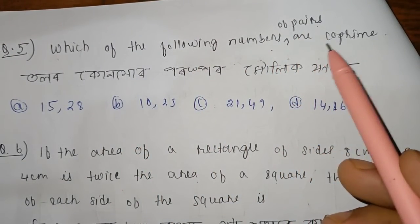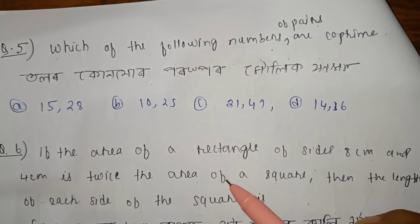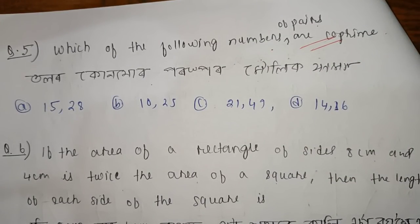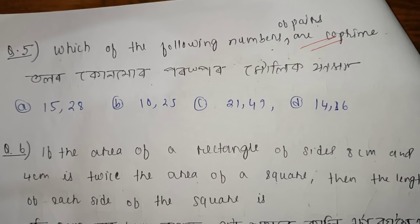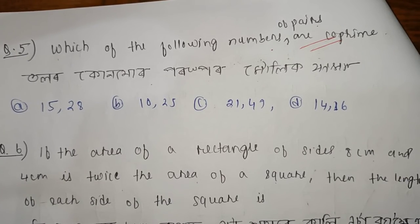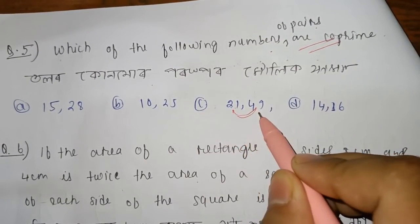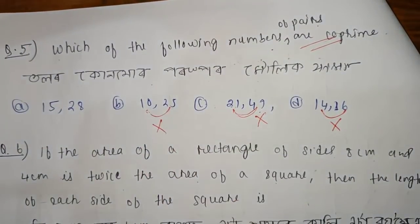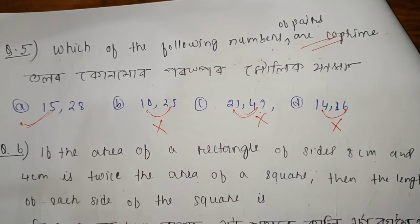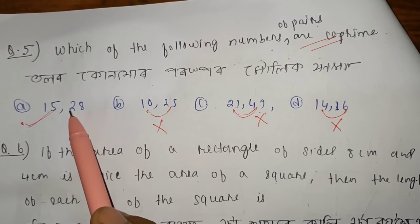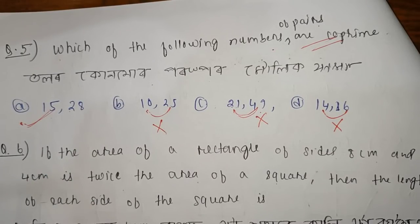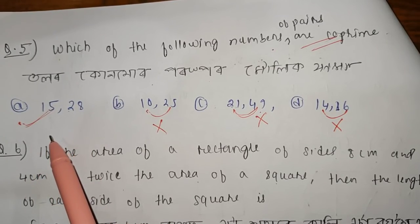The next question: which of the following pairs of numbers are co-prime? A co-prime number pair has a common factor of only 1. For co-prime numbers, the HCF must equal 1. Based on this, we can identify the co-prime pair. This is clear.